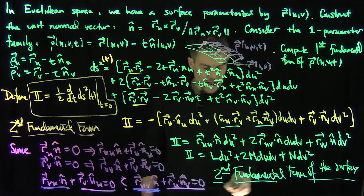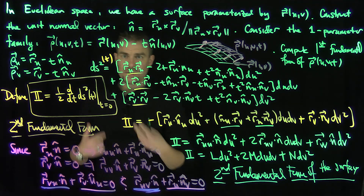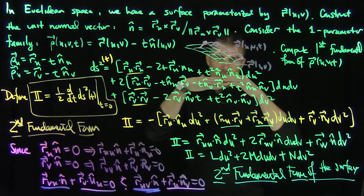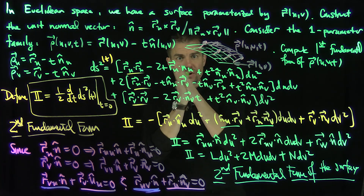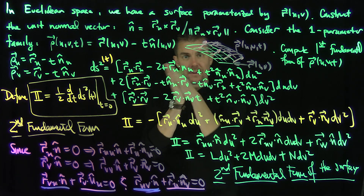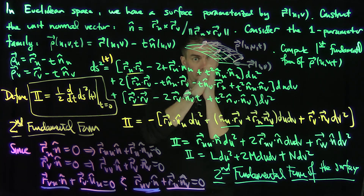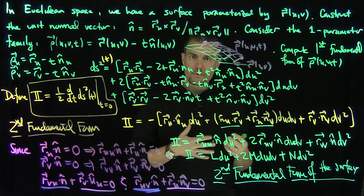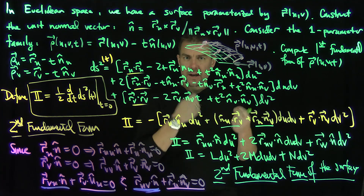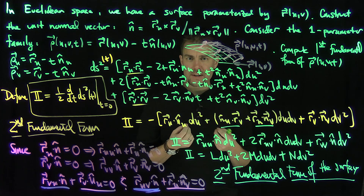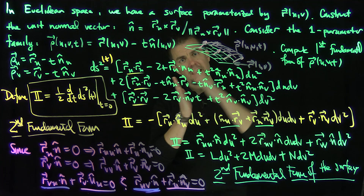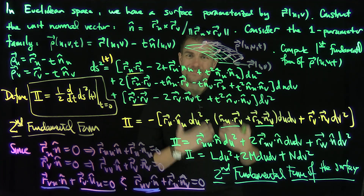This second fundamental form of the surface will allow us to compute curvatures — the Gaussian curvature, sectional curvatures, the mean curvature, and a whole bunch of different curvatures. What we're really doing by this perturbation is figuring out how much the normal vector is changing, and how much the normal vector changes is a measure of curvature. This connects to the Gauss map and the Weingarten map, and it mirrors ideas from curve theory, where the derivative of the normal vector encapsulates curvature and torsion. Thank you very much.